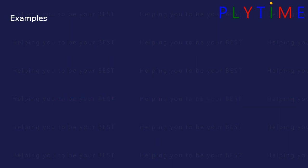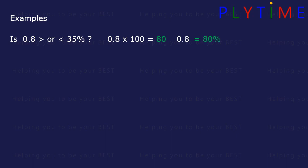Let's look at some examples. Is 0.8 greater than or less than 35%? Let's convert the decimal to a percentage. 0.8 multiplied by 100 is 80%, so 0.8 is the same as 80%. 80% is greater than 35%, so we can say 0.8 is greater than 35%.